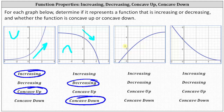For the next graph, from left to right the graph is going uphill, so the function is increasing. The shape of the graph is in the shape of the left side of a downward-facing cup, indicating the function is concave down.